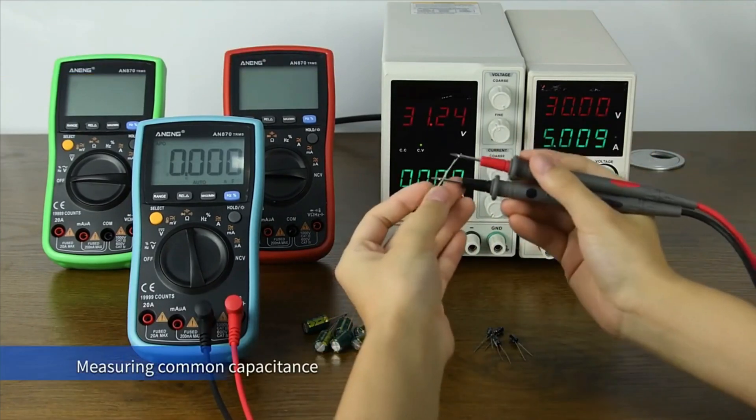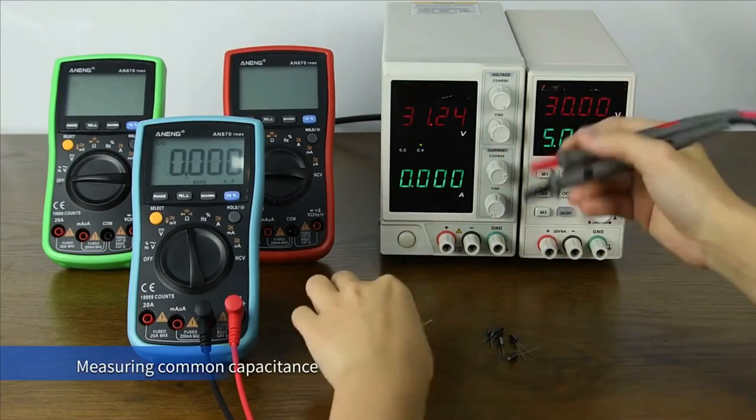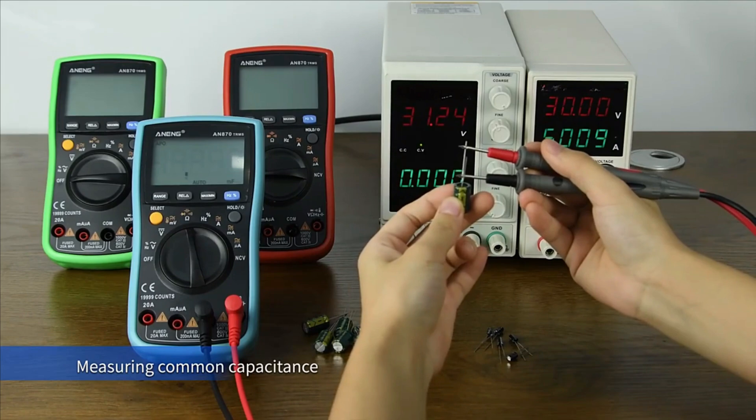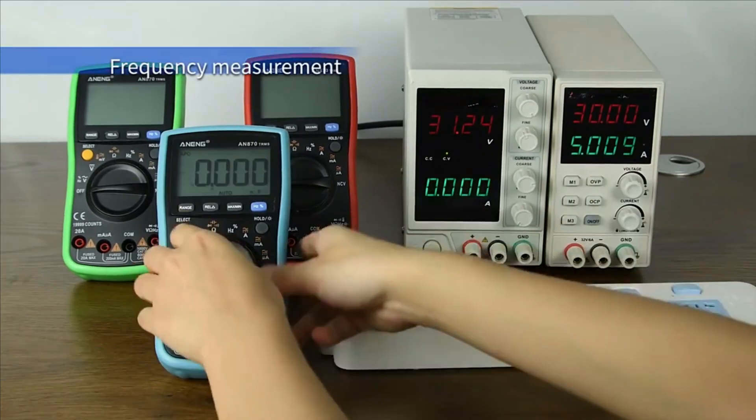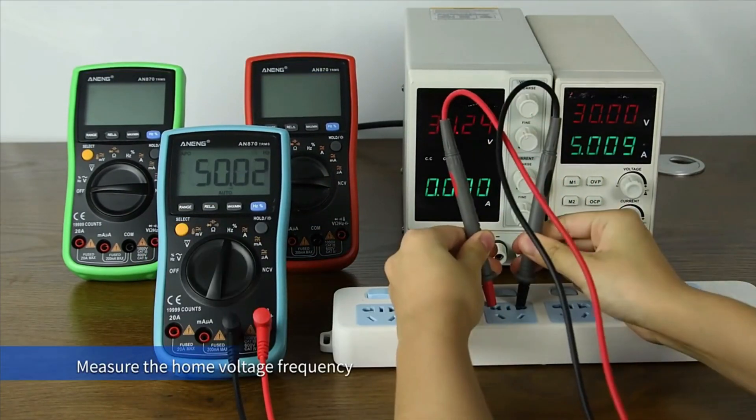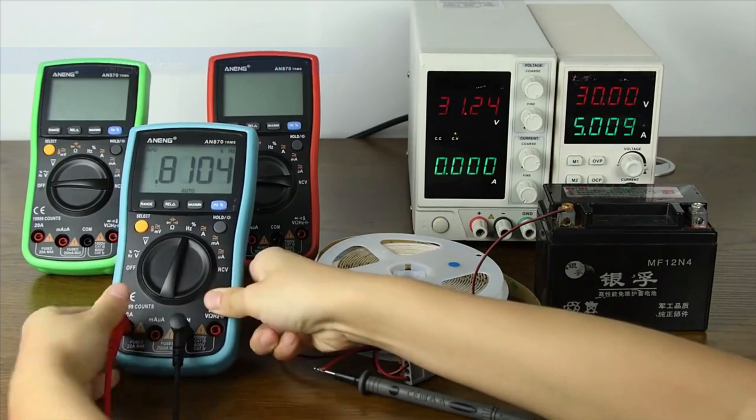Available in green and red, the device offers a modern aesthetic and ergonomic design. The Aning 870 is ideal for both professionals and DIY enthusiasts, handling everything from circuit testing to measuring capacitances.